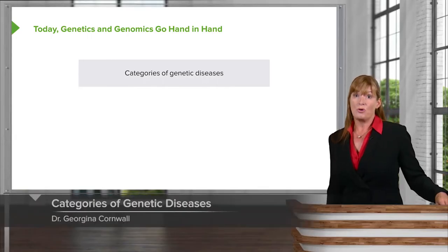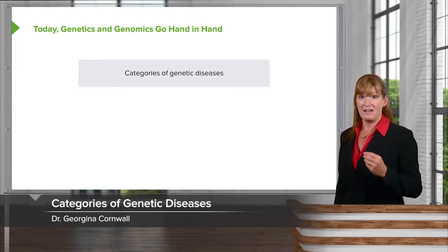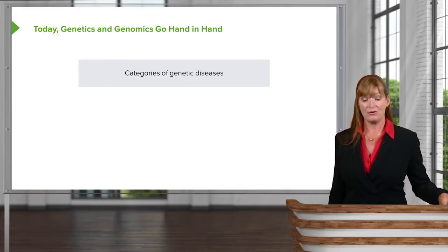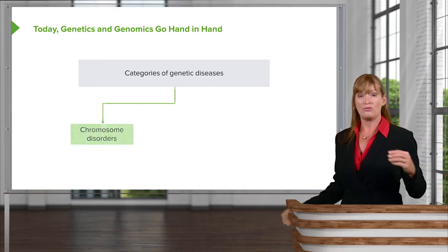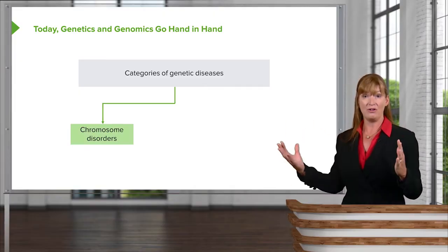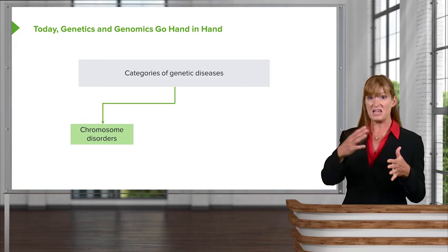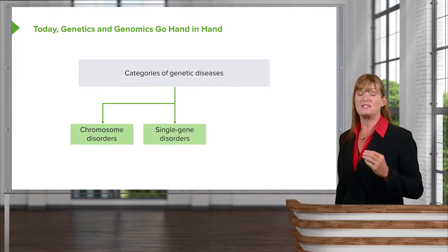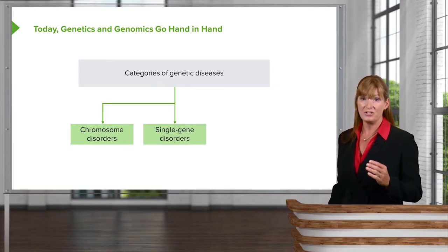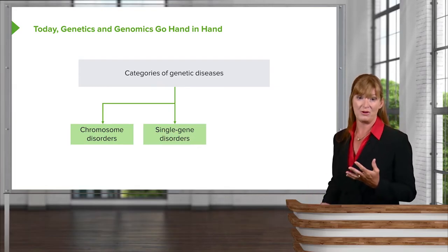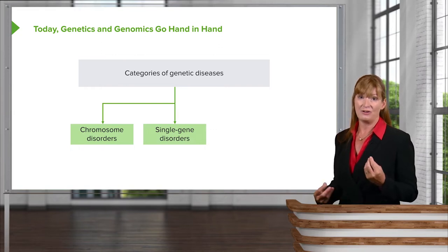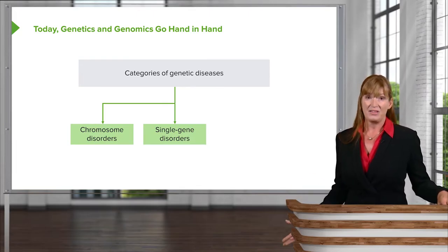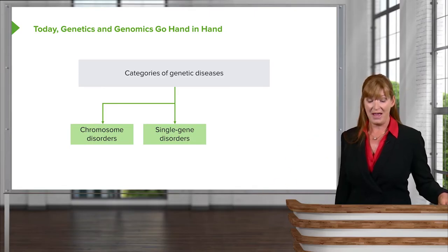As we go through this course, I'll be covering several different categories of genetic diseases. The first category we'll look at are chromosomal disorders — disorders on the level of the whole chromosome that we can see when visualizing someone's karyotype. We'll also consider single gene disorders, the ones you're probably more familiar with from general biology, where we look at classic inheritance patterns, things we can predict with a pedigree.